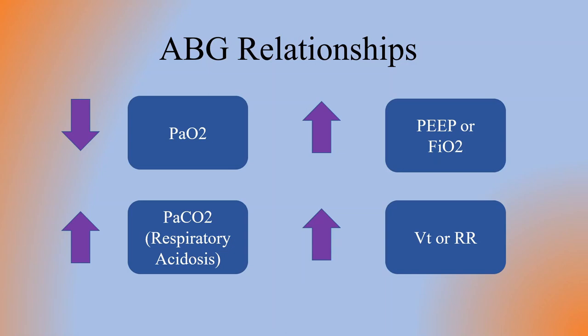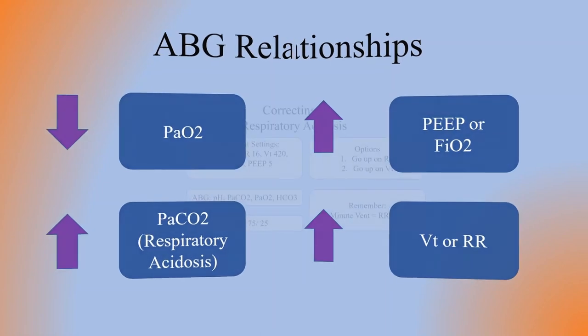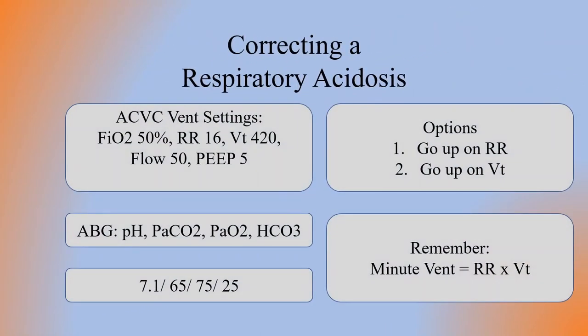If you have a high PaCO2 and a low pH, that's considered a respiratory acidosis. You have two options: you can increase the tidal volume or the respiratory rate. Let's look more closely at correcting a respiratory acidosis. If we're looking at a volume control vent setting with the following settings: FiO2 of 50, respiratory rate of 16, tidal volume of 420, flow of 50,